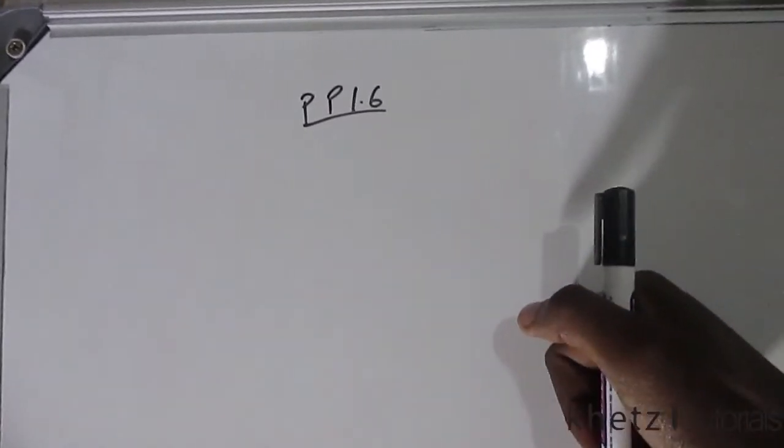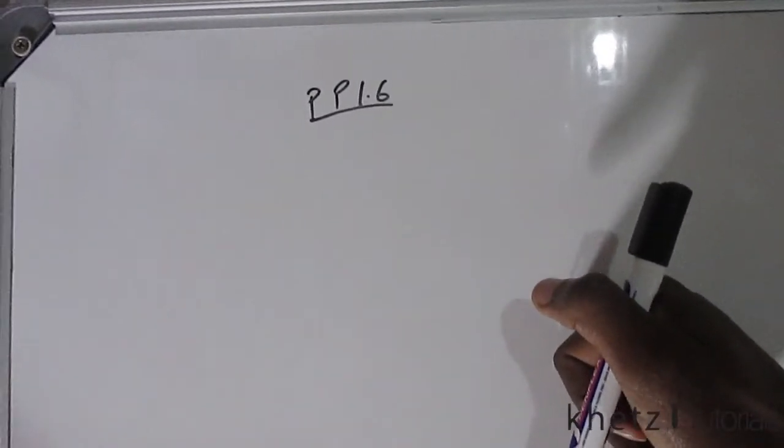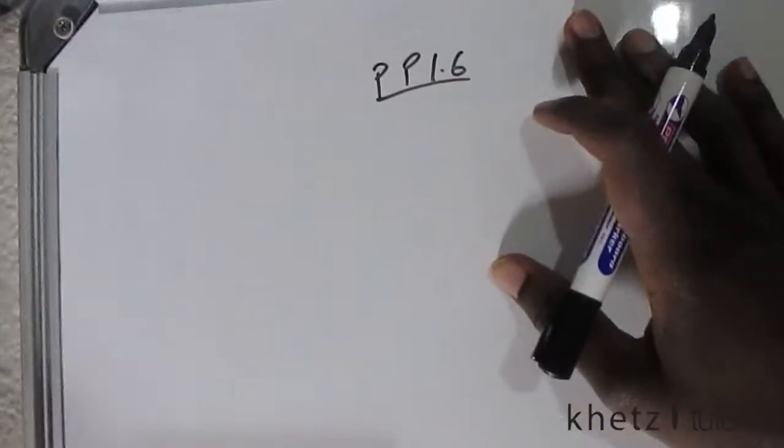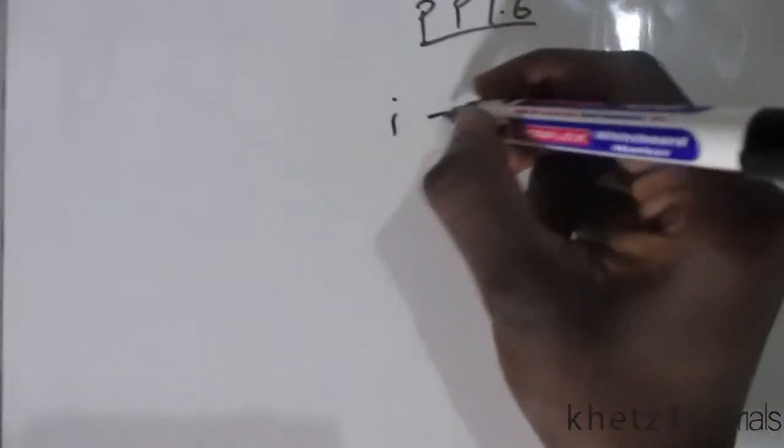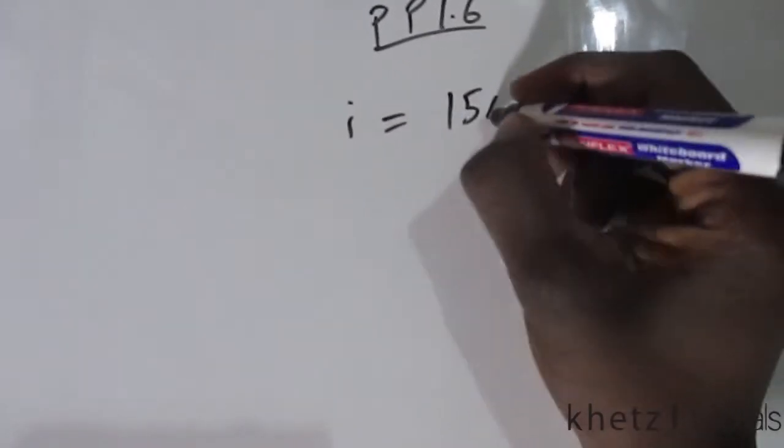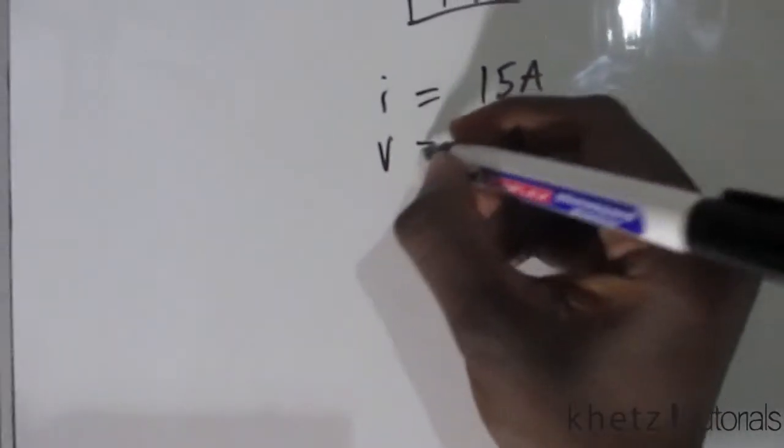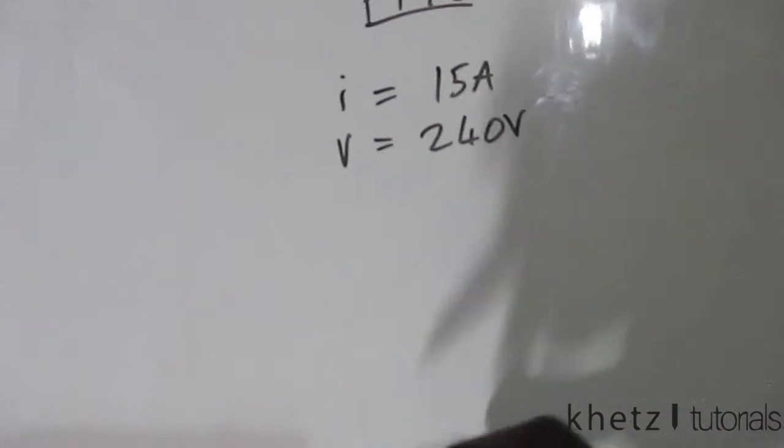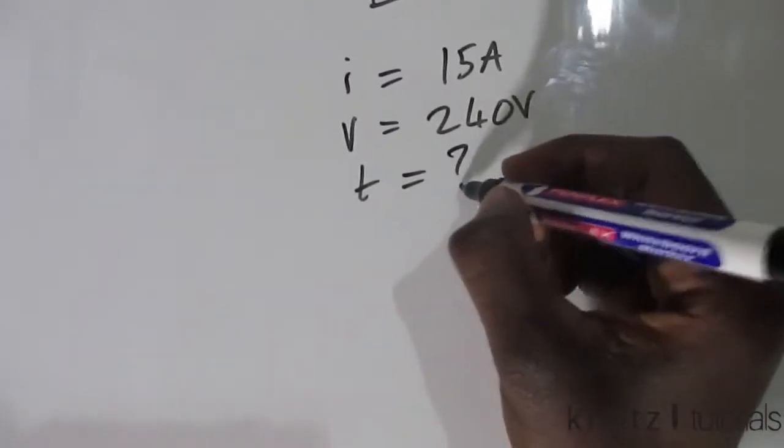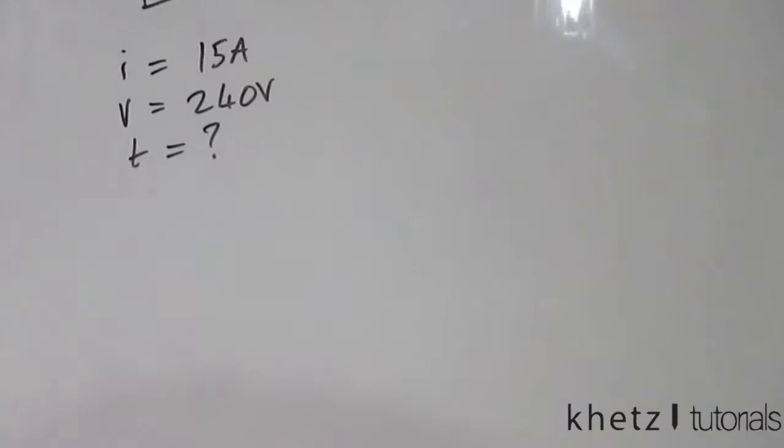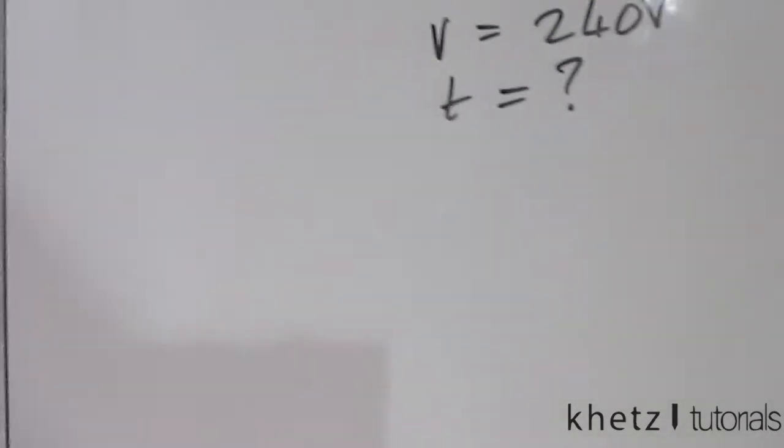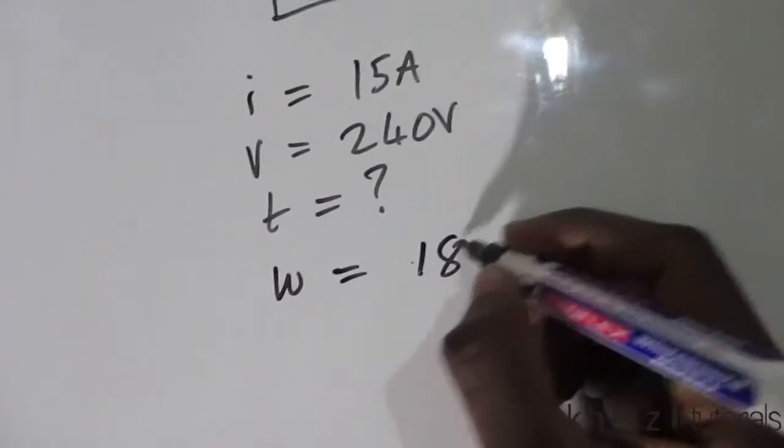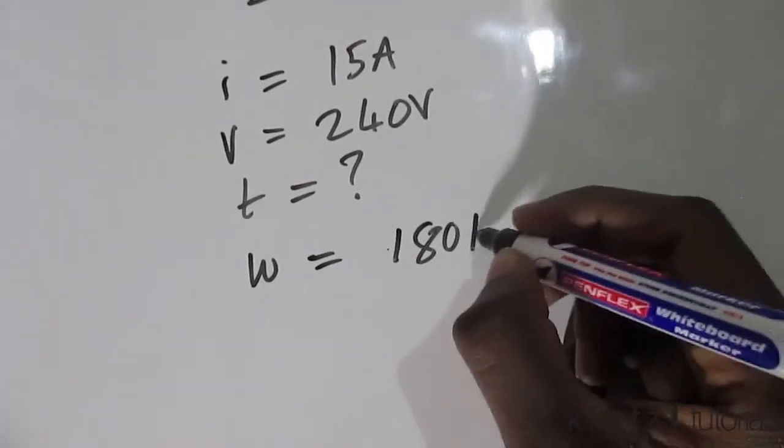Welcome back to CATS tutorials and in this video we're going to be doing practice problem 1.6. Given a stove element which draws 15 amperes and connected to a line of 240 volts, calculate the time that it will take the stove to consume 180 kilojoules.